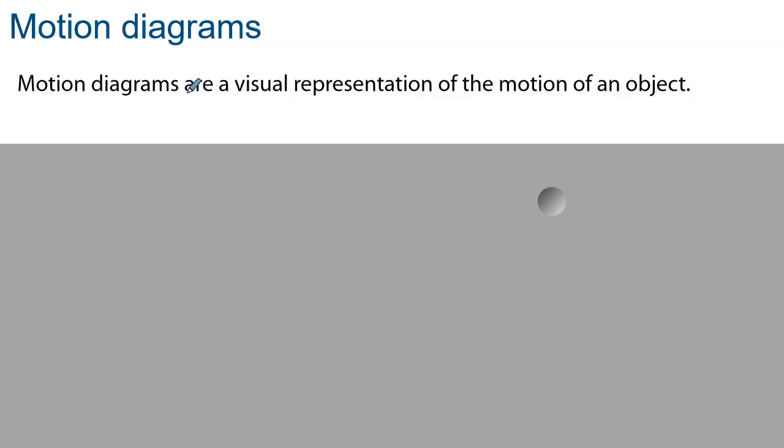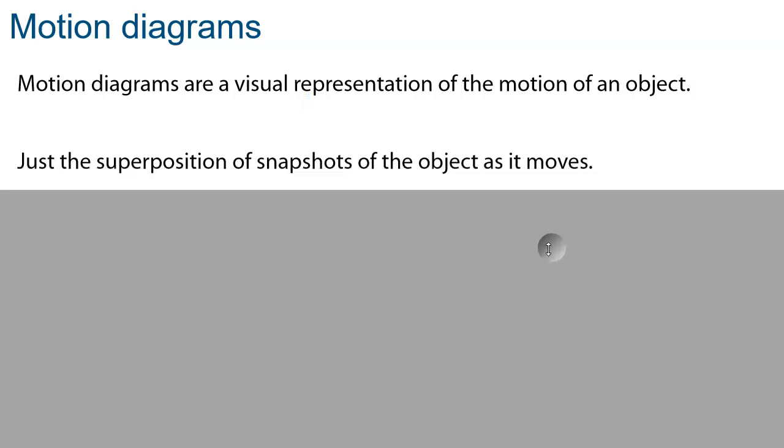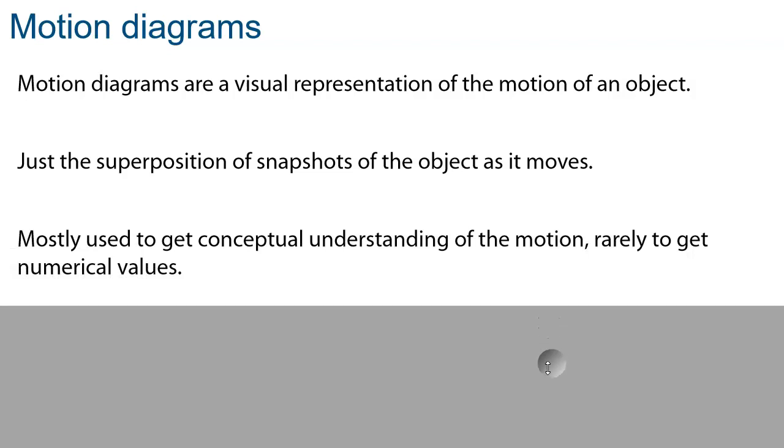So what are motion diagrams? Motion diagrams are just a visual representation of the motion of an object. You can think of it as the superposition of snapshots of an object as it moves. Mostly, we use it to get the conceptual understanding of the motion, rarely to get numerical values.